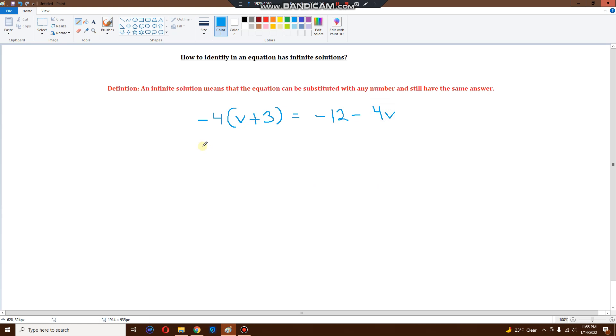So I'm going to use a distributive property. I'm going to multiply it all out. So it'll be minus 4v and minus 4 times 3 is minus 12 is equal to minus 12 minus 4v. Same thing. I'm going to do the jump technique left and right.